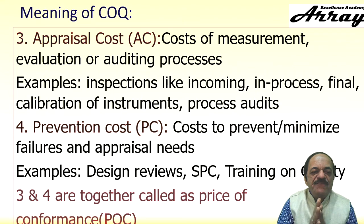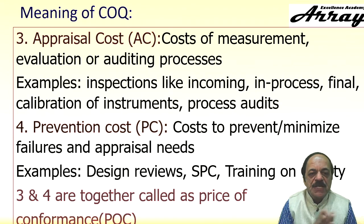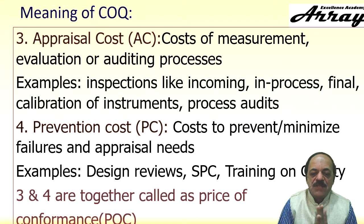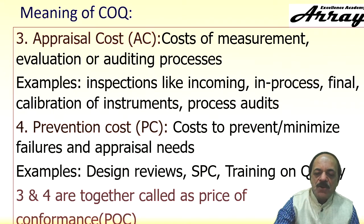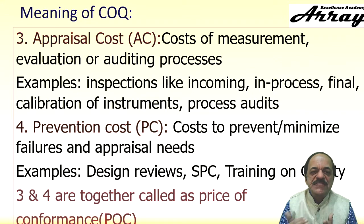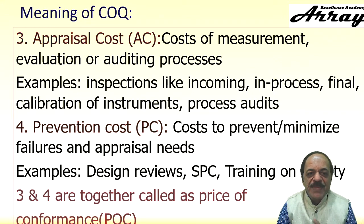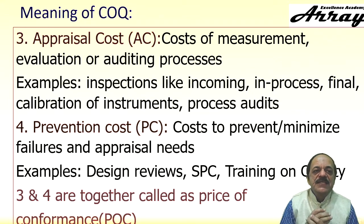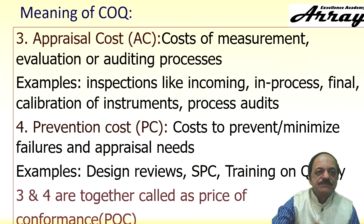Appraisal cost and prevention cost together are called the Price of Conformance (POC). So: POC = appraisal cost + prevention cost; PONC (Price of Non-Conformance) = external failure cost + internal failure cost.